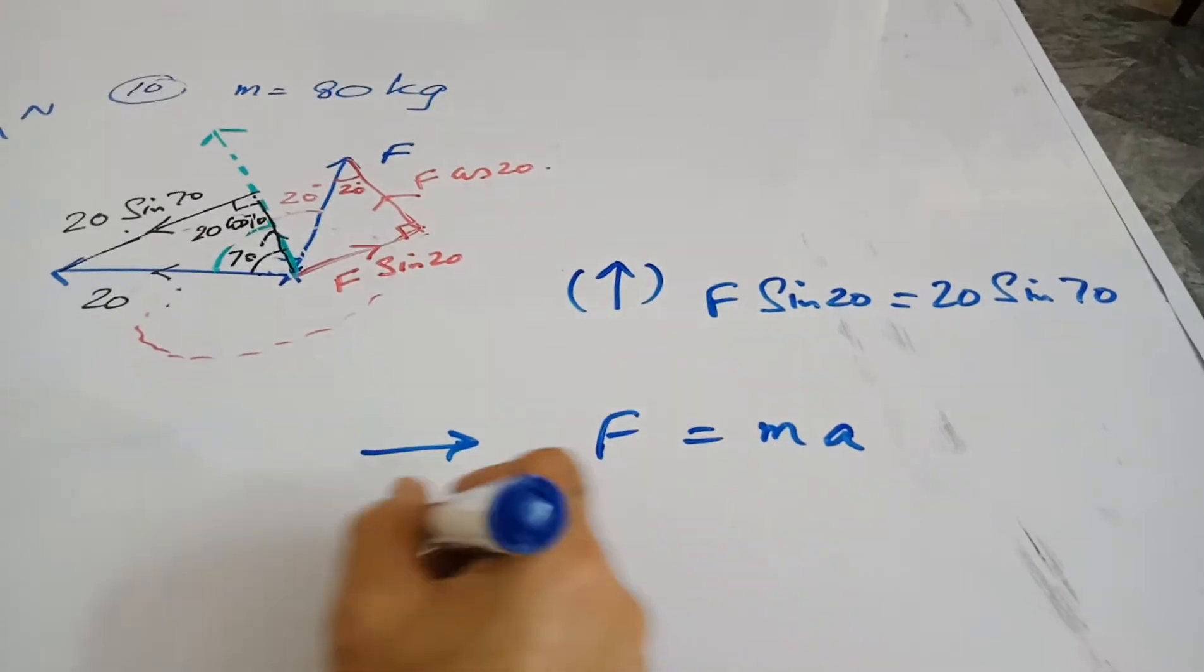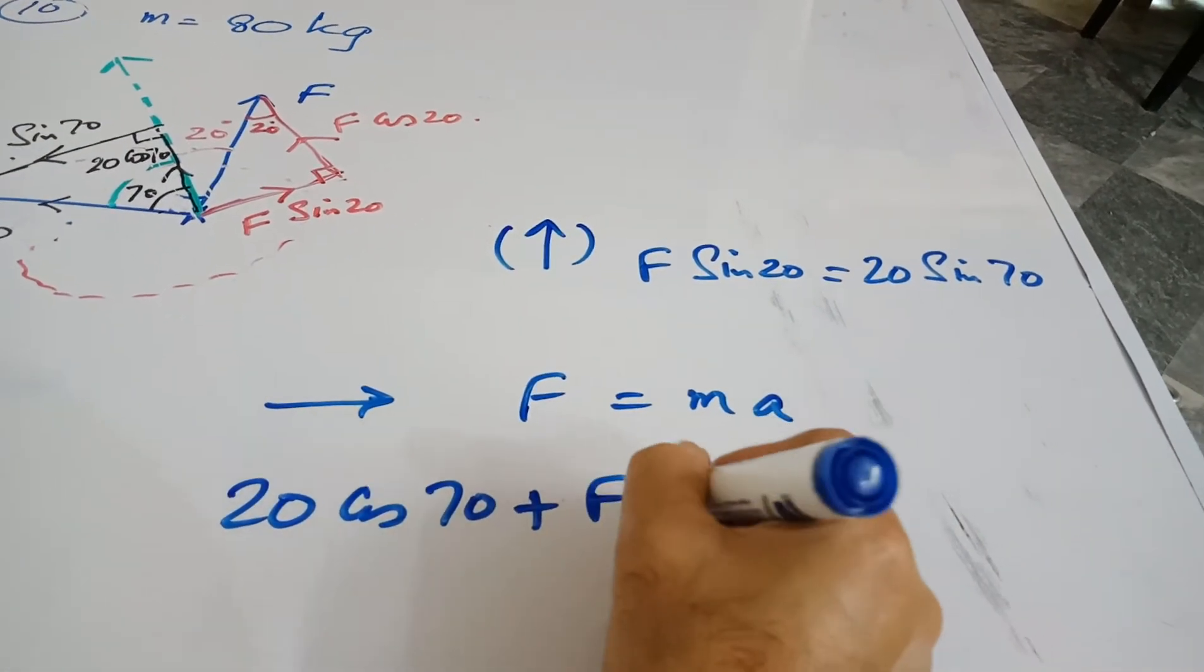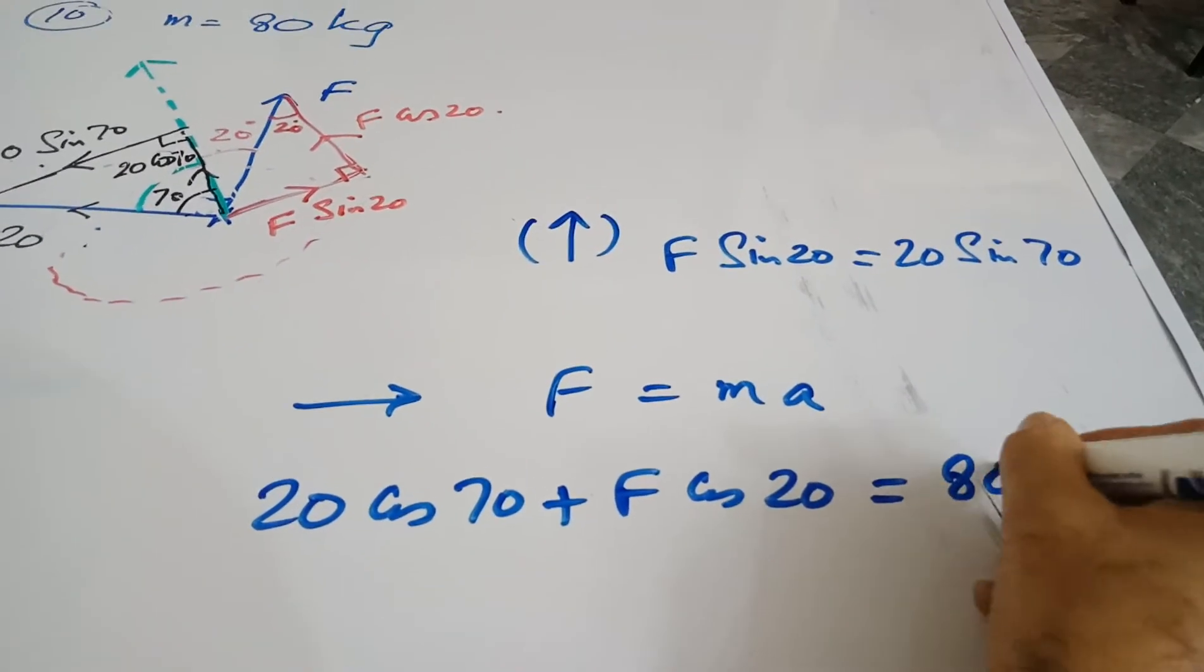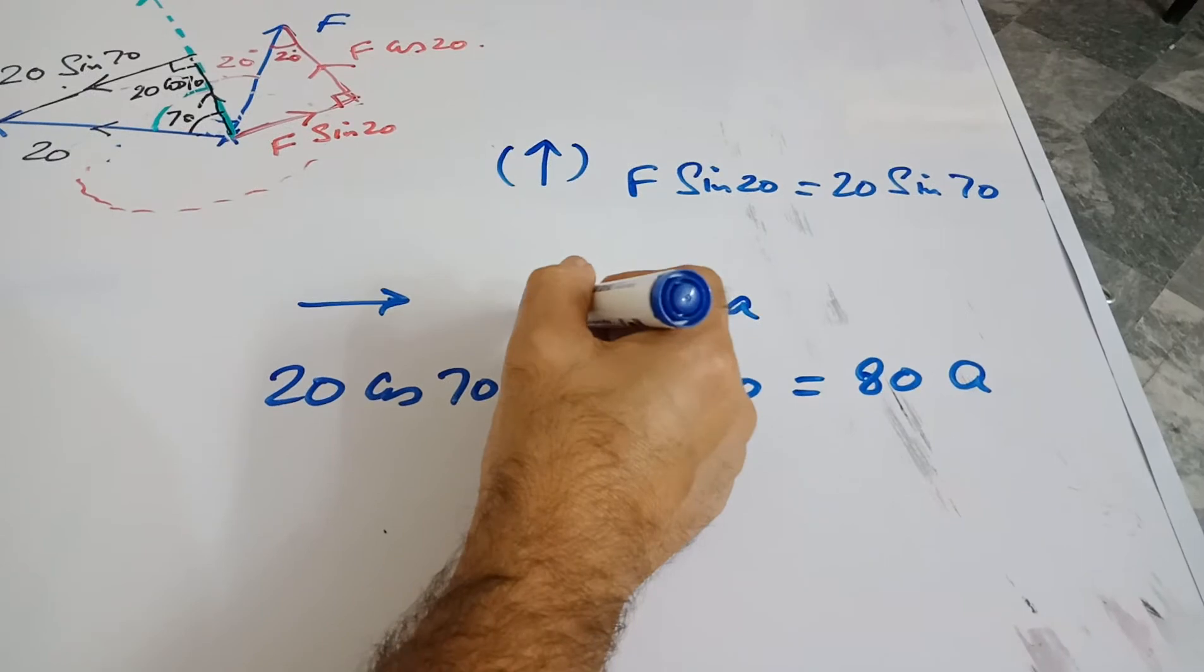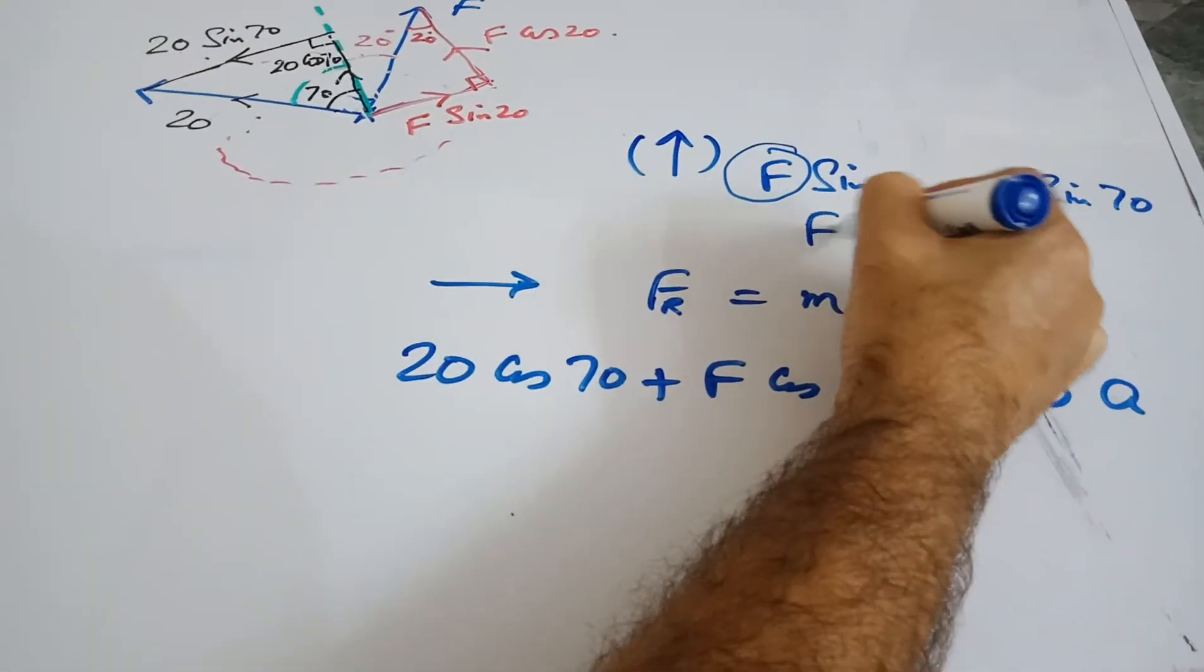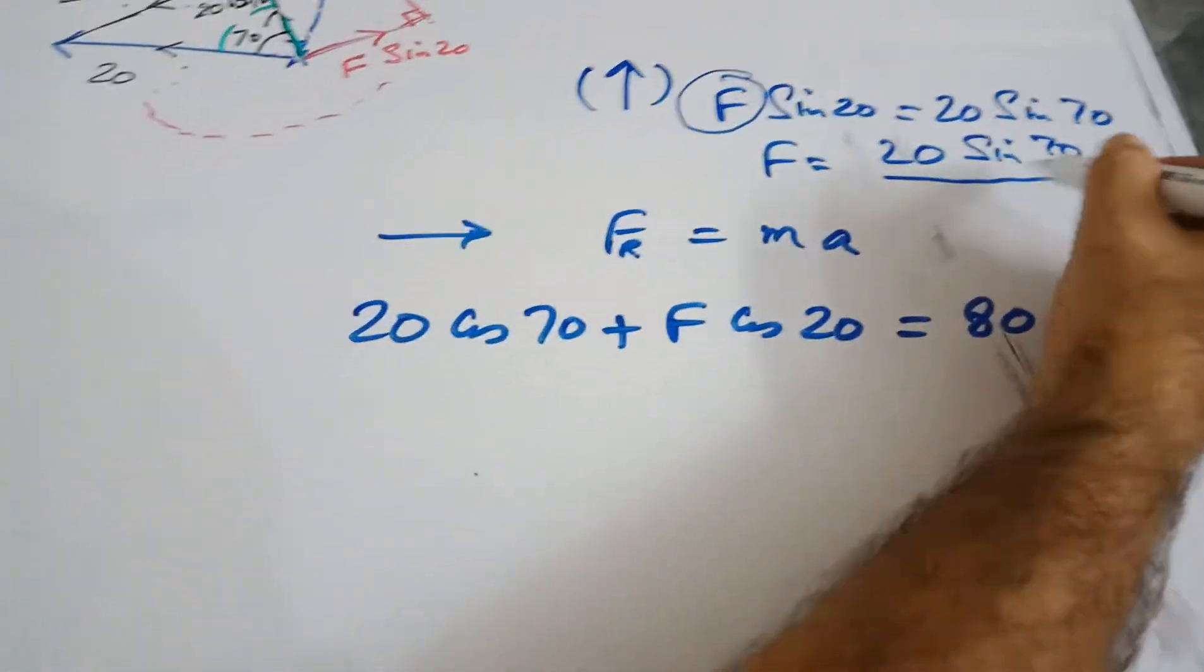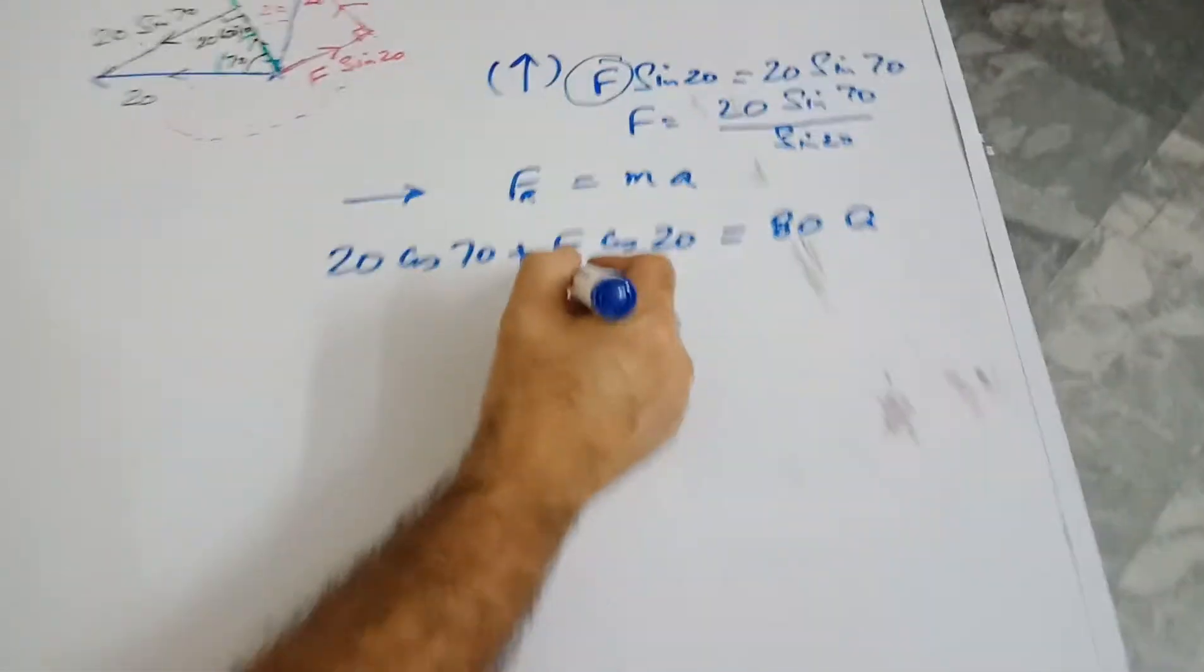There are two forces which are acting in this direction, so one is going to be 20 cos 70 and the other is F cos 20, and the mass is 80 times A. So you find your F, you see this F happening here, so this F is basically the resultant over here.